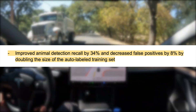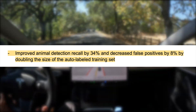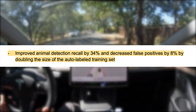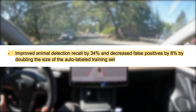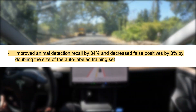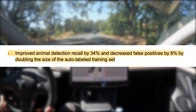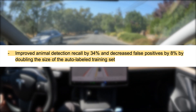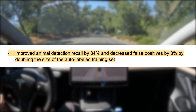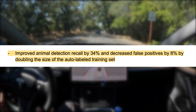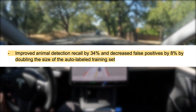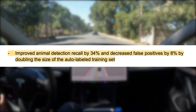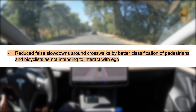The second note is improved animal detection recall by 34% and decreased false positives by 8% by doubling the size of the auto-labeled training set. This is an important one — any improvement that reduces false positives and makes the driving experience smoother is a win.